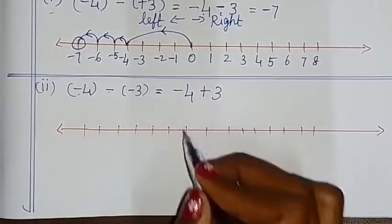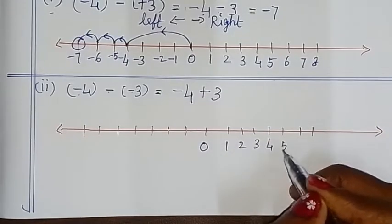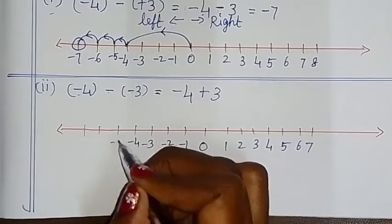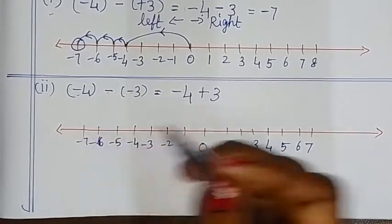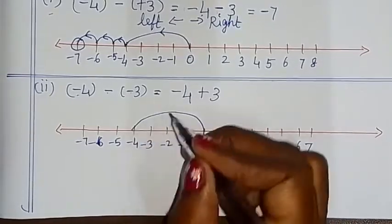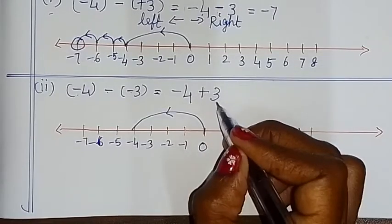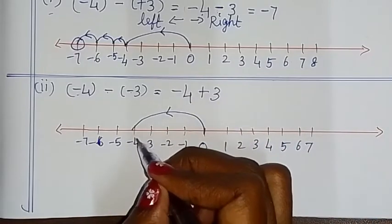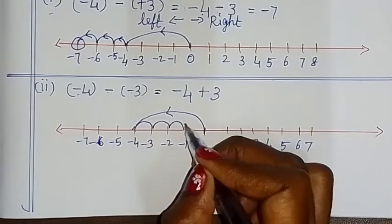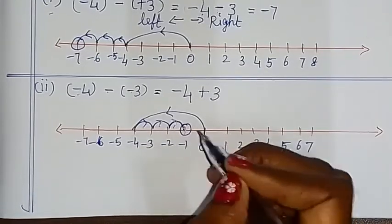Number line: middle is 0, right side is 1, 2, 3, 4, 5, 6, 7; left side is minus 1, minus 2, minus 3, minus 4, minus 5, minus 6, minus 7. Start at 0, move to minus 4. Now the symbol is plus, so move right side — count 3: 1, 2, 3. Answer is minus 1. That is the answer.